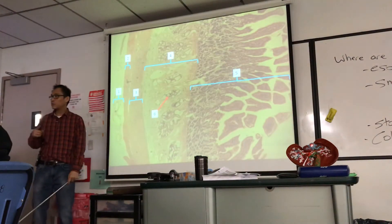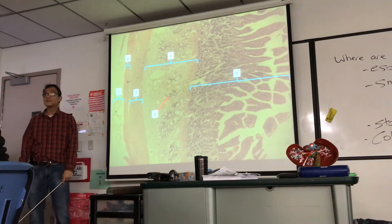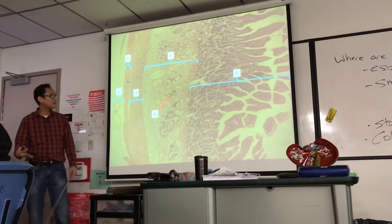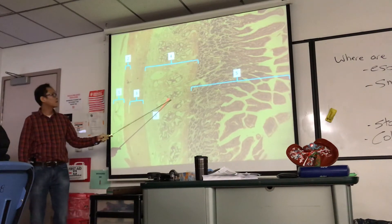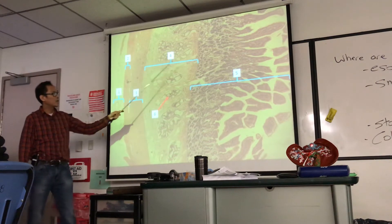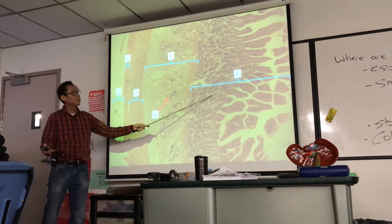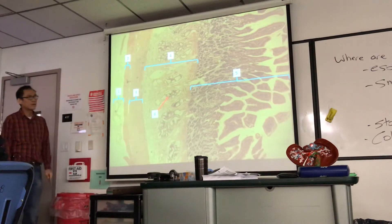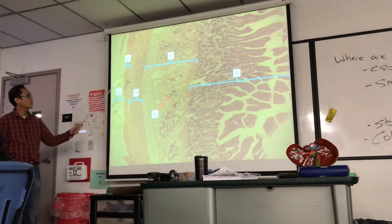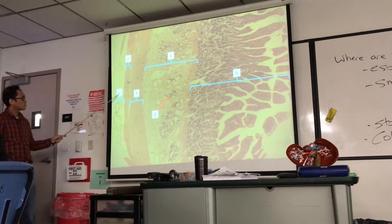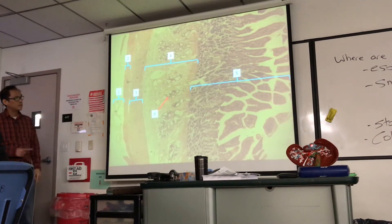Moving on from stomach to small intestine. This is the duodenum, so what do you expect to look for? Brunner's glands — boom, number six. They're within the submucosa. If number four is submucosa, number five is mucosa. Numbers two and three are the layers of muscularis externa: longitudinal layer, circular layer. Number one: serosa or adventitia. This is the duodenum.